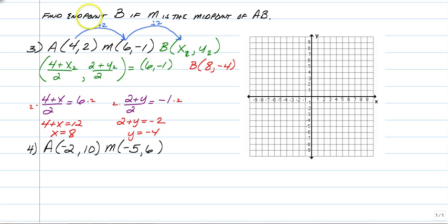And then you would do the exact same thing for your y coordinates. To get from 2 to negative 1, I would subtract 3. And to get from negative 1 to the other y, I would subtract 3 more. And negative 1 minus 3 is still negative 4.